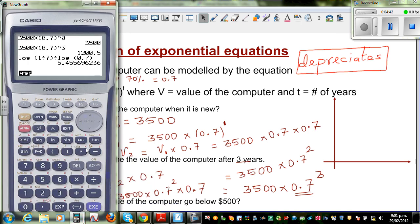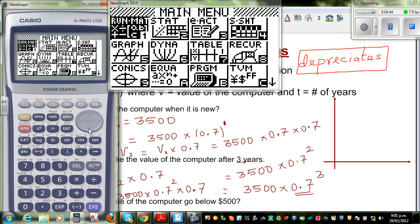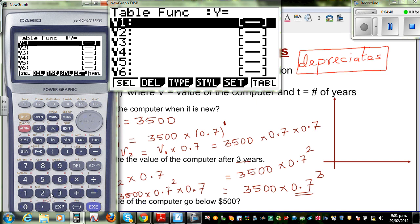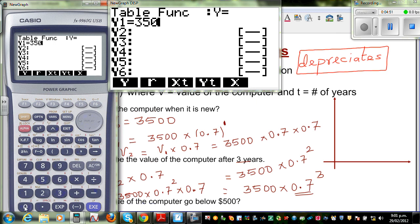So this is my calculator. Menu, you go to your table menu. So now I'm going to type in 3,500 times 0.7 raised to x. So your x is your t, and your y1 is your v.